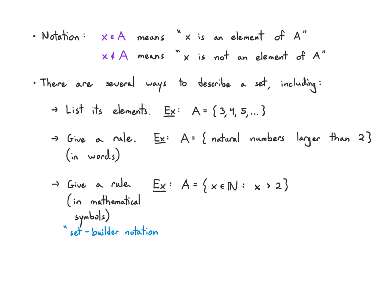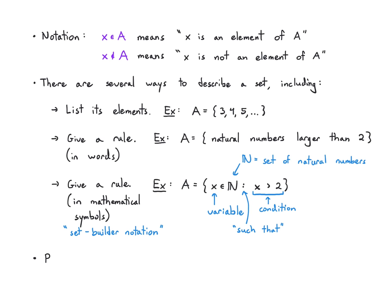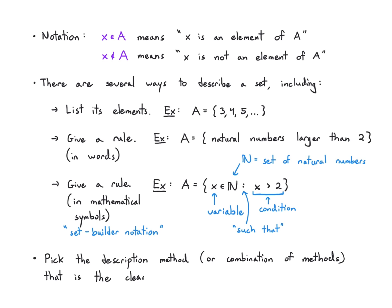This is called set builder notation. The way it works: I have a variable — in this case x — it's an element of a set; the universal set is, in this case, the natural numbers; there's a 'such that' colon; and there is a condition, in this case greater than 2. If you parse this, it means the same thing as the rule in words: natural numbers that are larger than 2. Each description method is convenient in different contexts, and sometimes we use them in combination. The important thing is that whichever method seems clearest to you is the one you should use — there's no right answer, just whatever is most convenient.